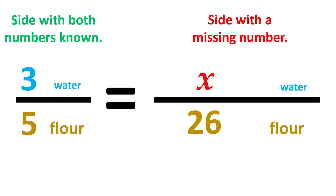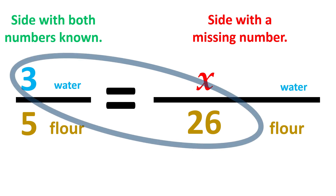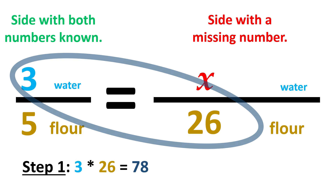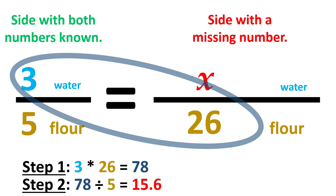Step 1 is to cross-multiply — multiply the numbers that are diagonally across from each other. For this problem, it's 3 and 26, which equals a new product of 78 ounces. In Step 2, we divide our new product of 78 by the other number, which is 5. That gives an answer of 15.6 ounces of water.